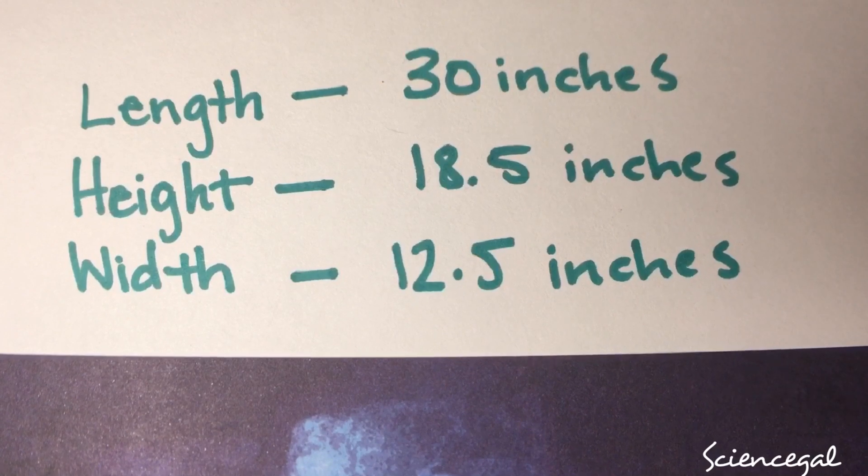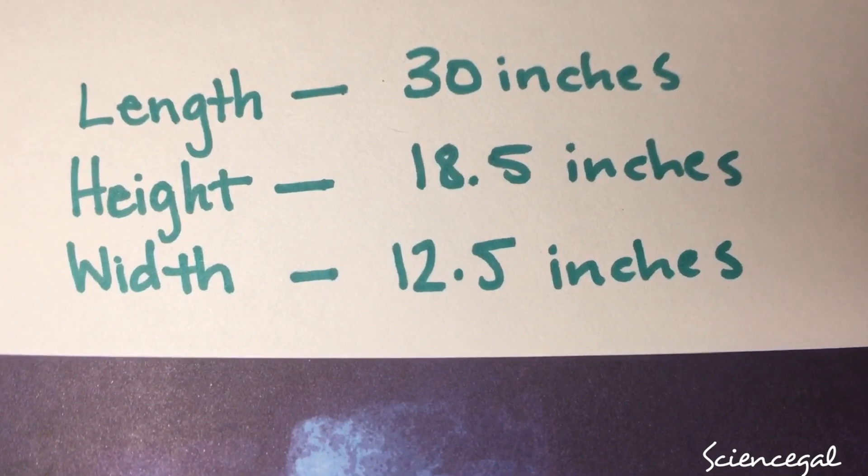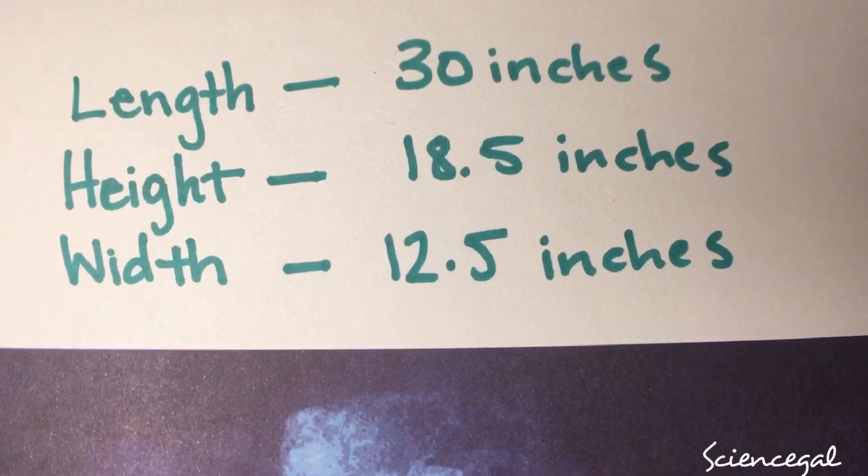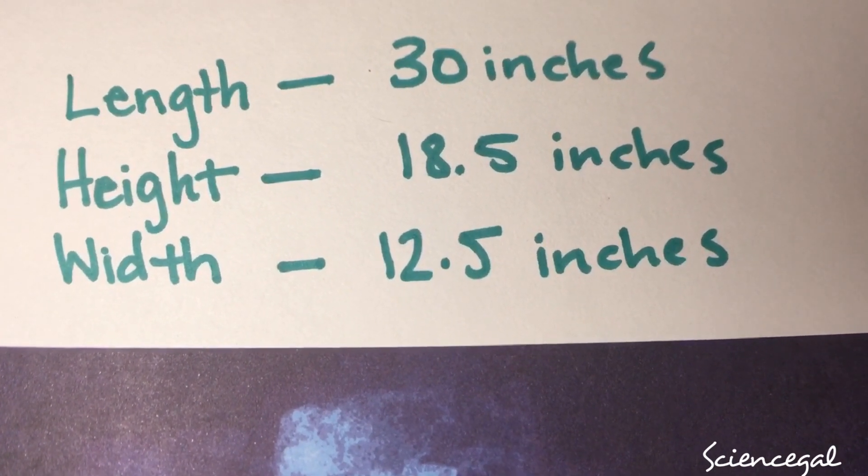And what you're going to do is multiply each of these together. I got 30 times 18.5 times 12.5.